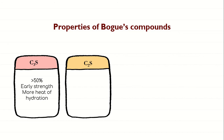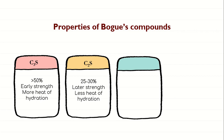The next Bogue compound is C2S. C2S is the second most abundant compound in Portland cement, present at around 25 to 30%. The hydration of C2S starts after seven days — once C3S completes its hydration, C2S begins. Hence the strength attributed by C2S is after seven days. C2S hydrates and hardens slowly, provides much of the ultimate strength, is responsible for later strength of concrete, and produces less heat of hydration.